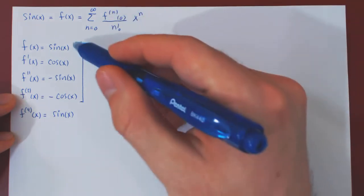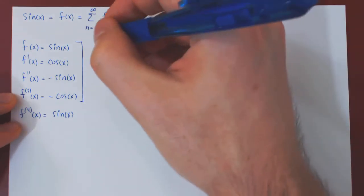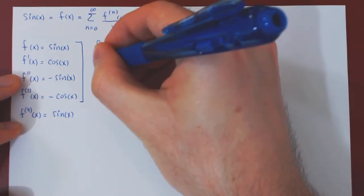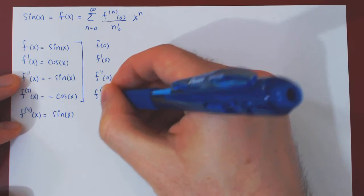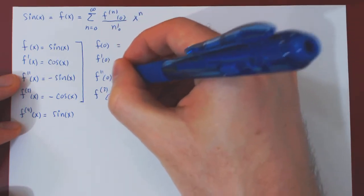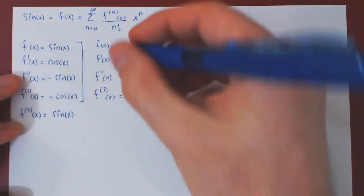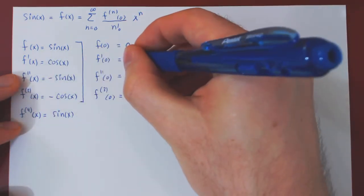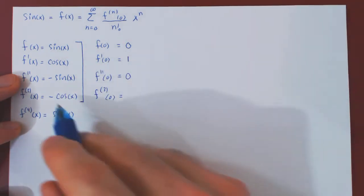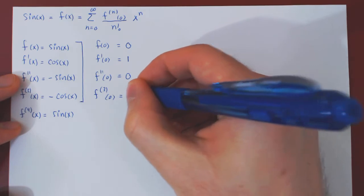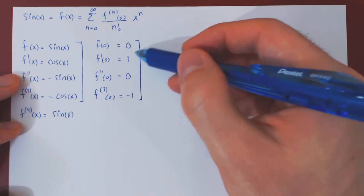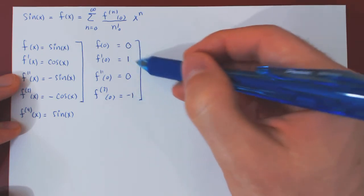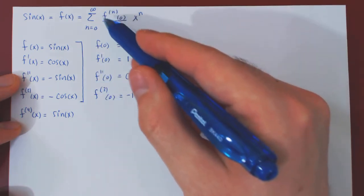Now let's evaluate the derivatives at x equals 0. We get f(0) = sin(0) = 0, f'(0) = cos(0) = 1, f''(0) = -sin(0) = 0, f'''(0) = -cos(0) = -1. This pattern repeats: 0, 1, 0, -1, 0, 1, 0, -1 forever. These values form the numerators of the Maclaurin series coefficients.